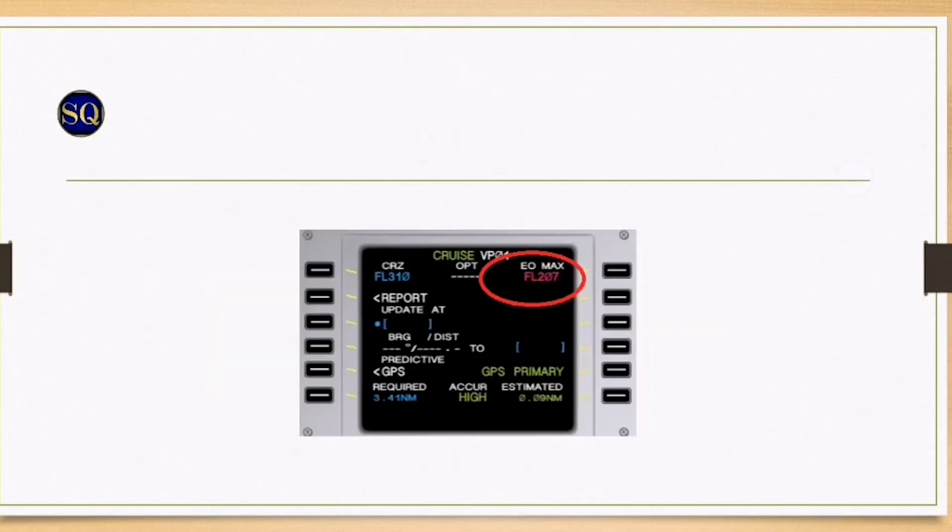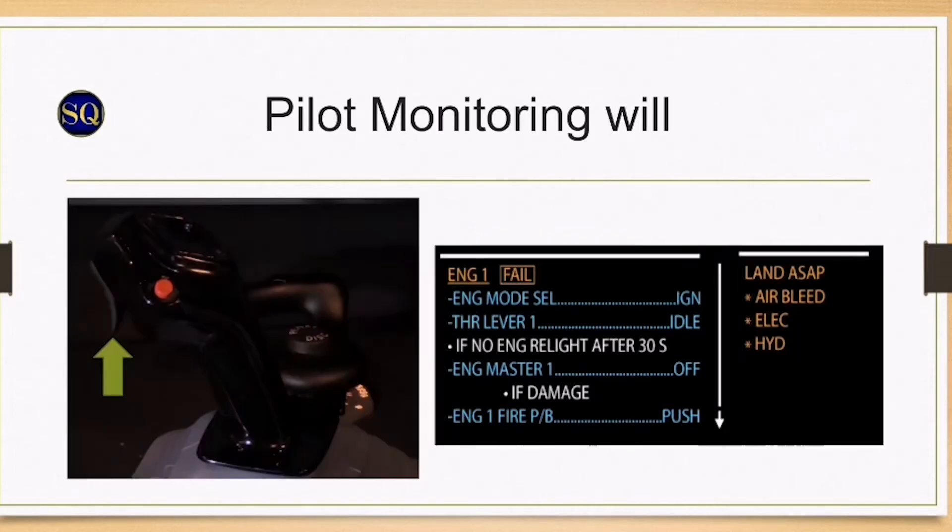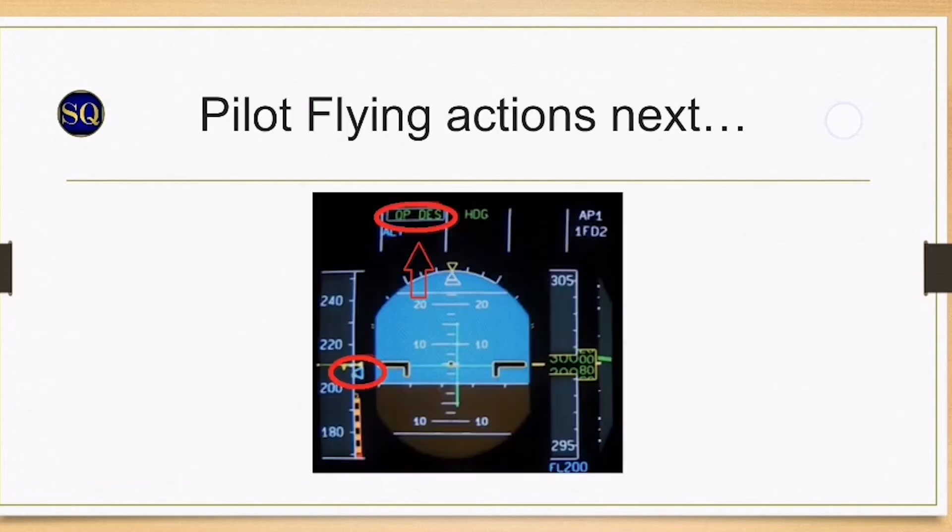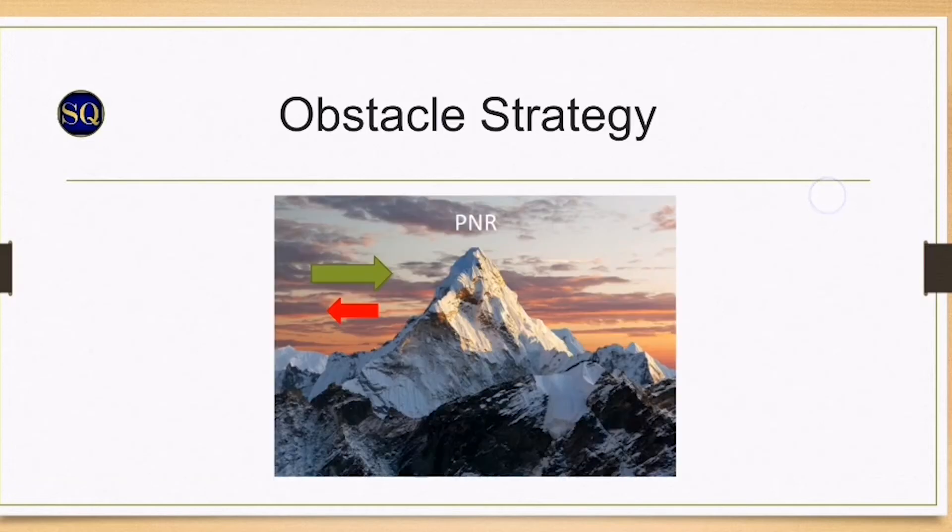Select an engine out altitude. The FMGS computes an engine out maximum altitude at long range cruise speed and displays it on the progress page. It assumes engine anti-ice is off. The crew can also determine the engine out ceiling from the performance section of the QRH. The pilot monitoring will inform ATC and perform ECAM actions when requested. When the speed reaches green dot, select open descent.